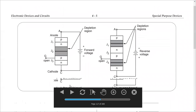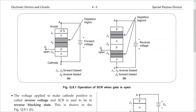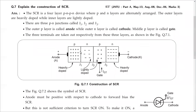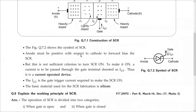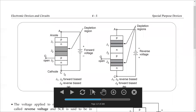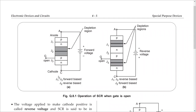When the device is forward biased — positive at P side, so J1 is forward biased; negative at N side, so J3 is also forward biased. But the positive signal reaches the N side, and the negative signal reaches the P side, so J2 is reverse biased. When the device is reverse biased, applying simple logic: J1 and J3 will now be reverse biased, and J2 is forward biased.